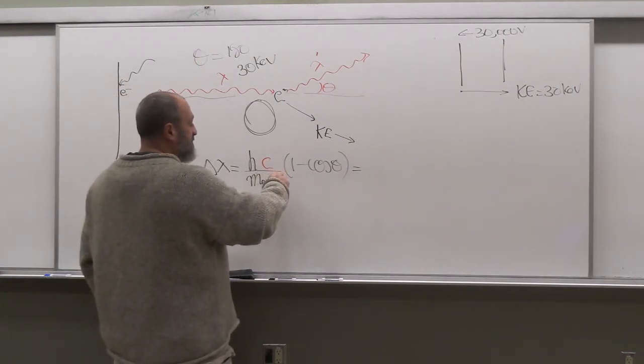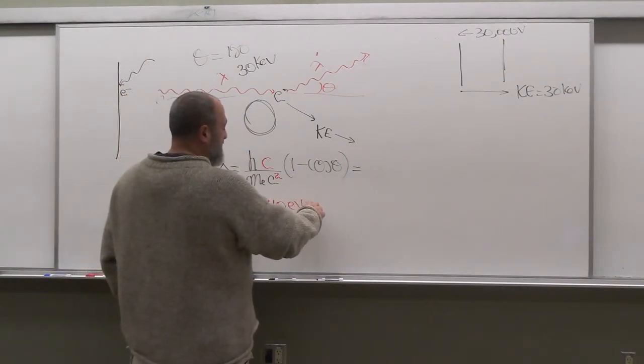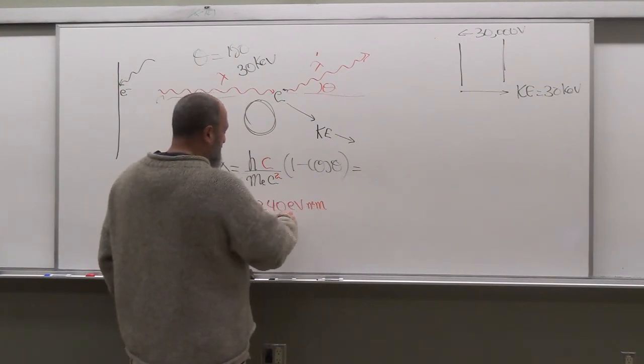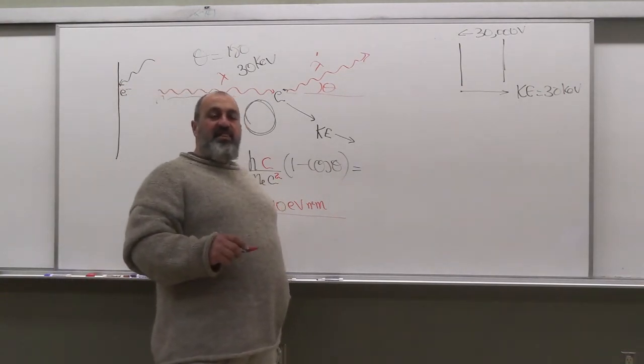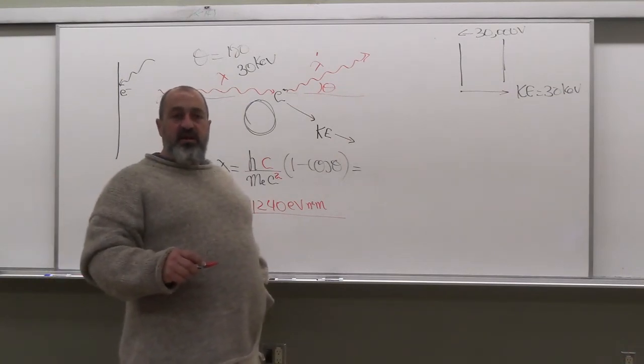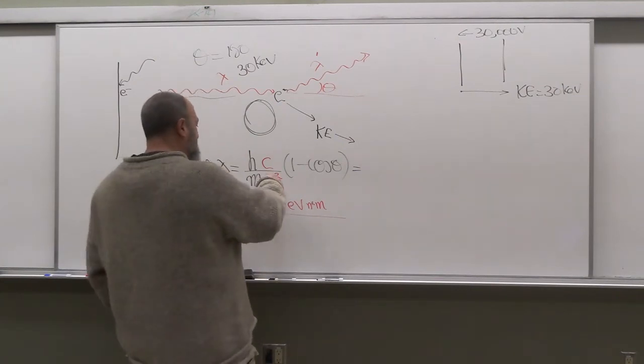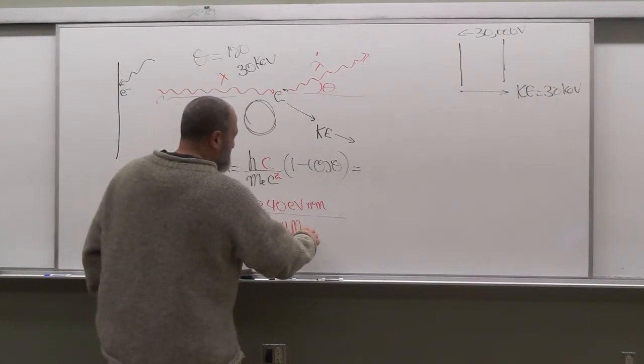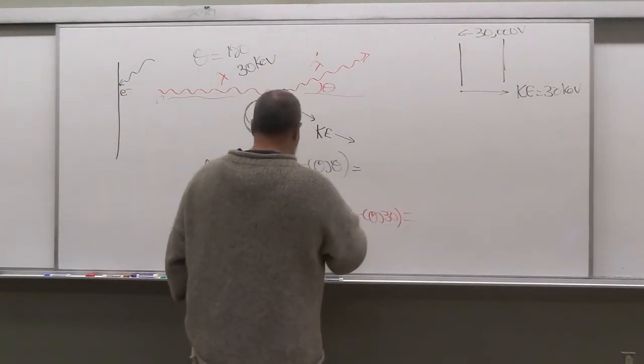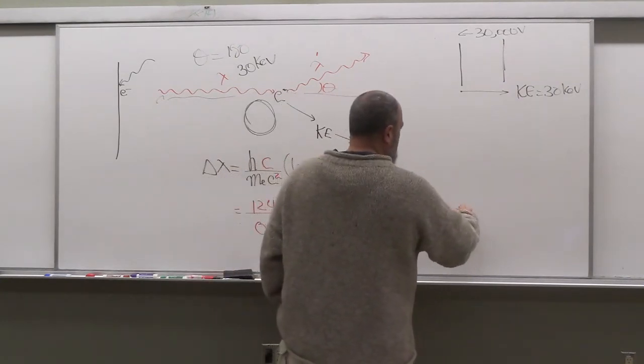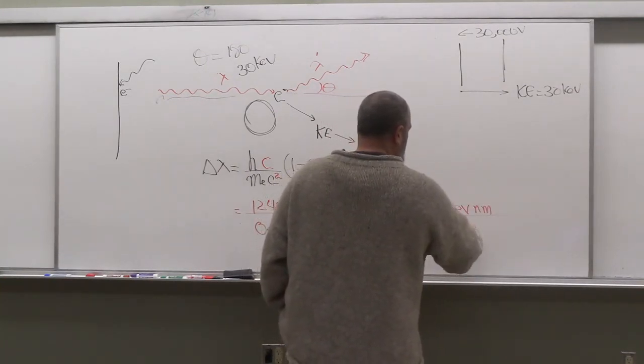You multiply by c up here, you multiply by c down here. And this number is what we know as, we already know this as 1240 eV nanometers. You should do it the other way too. And mₑc squared, what is that? That is, remember Einstein? E equals mc squared. That is called the rest mass energy of an electron. So that's how much energy went into creating the electron, if you want. The mass, the energy equivalent of the mass of the electron. And that number is 0.511 MeV.